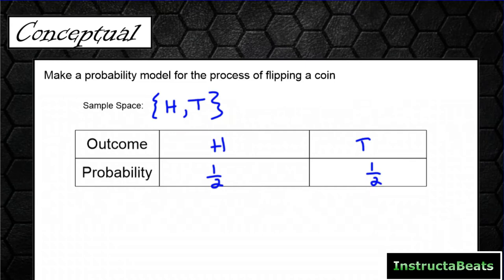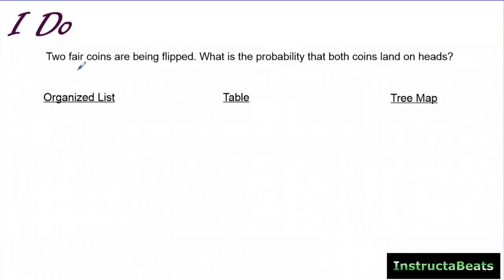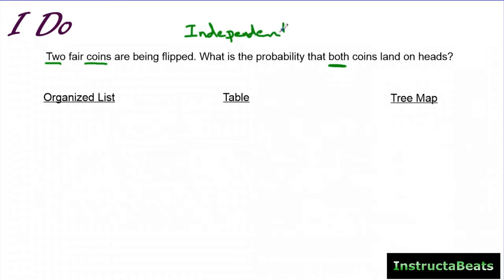Now let's look at the difference between a simple event and a compound event. Our IDO problem says two fair coins are being flipped. So now instead of one, we're doing two. What is the probability that both coins land on heads? This is called an independent compound event — we're flipping two coins that are independent of each other. If one coin lands on heads, that doesn't affect what the second coin will be.